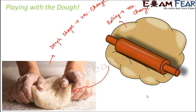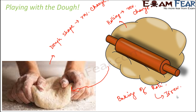Once you put the rolled chapati on the tawa, you are exposing it to high temperatures. The chemical composition changes when heating is done, and once the roti is baked you cannot get back the dough from that baked roti. So baking or cooking of the roti or chapati is definitely an irreversible change.